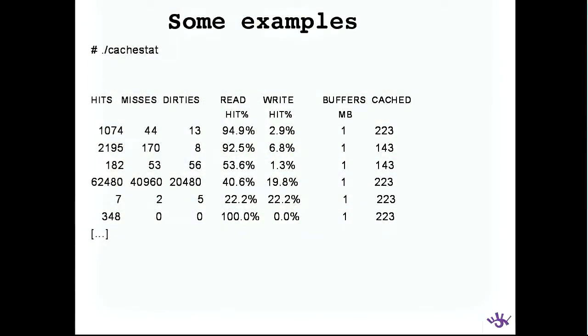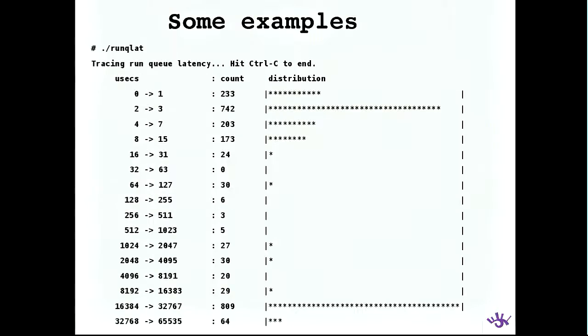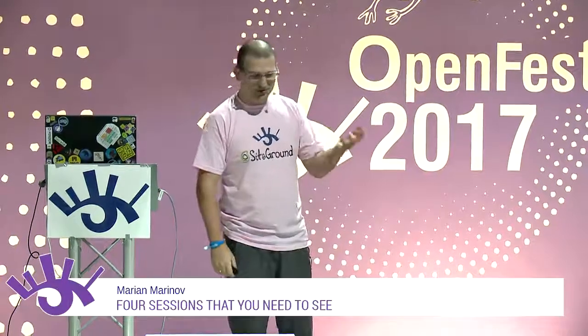The tools I really like are cache stats — knowing how much of a process's memory is in cache versus not. Also bio latency, biosnoop, and run queue analysis — analyzing CPU run queues is very hard and normally requires debug code running all the time. There will be a BPF workshop tomorrow, primarily for networking but we can also use the analytics tools.